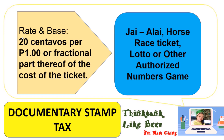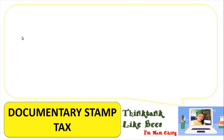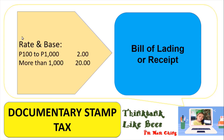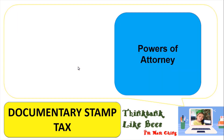For bills of lading or receipts, the rate is based on the amount: if your bill of lading or receipt is from 100 pesos to 1,000 pesos, you pay 2 pesos in documentary stamp tax. The minimum is 2 pesos and the maximum is 20 pesos.